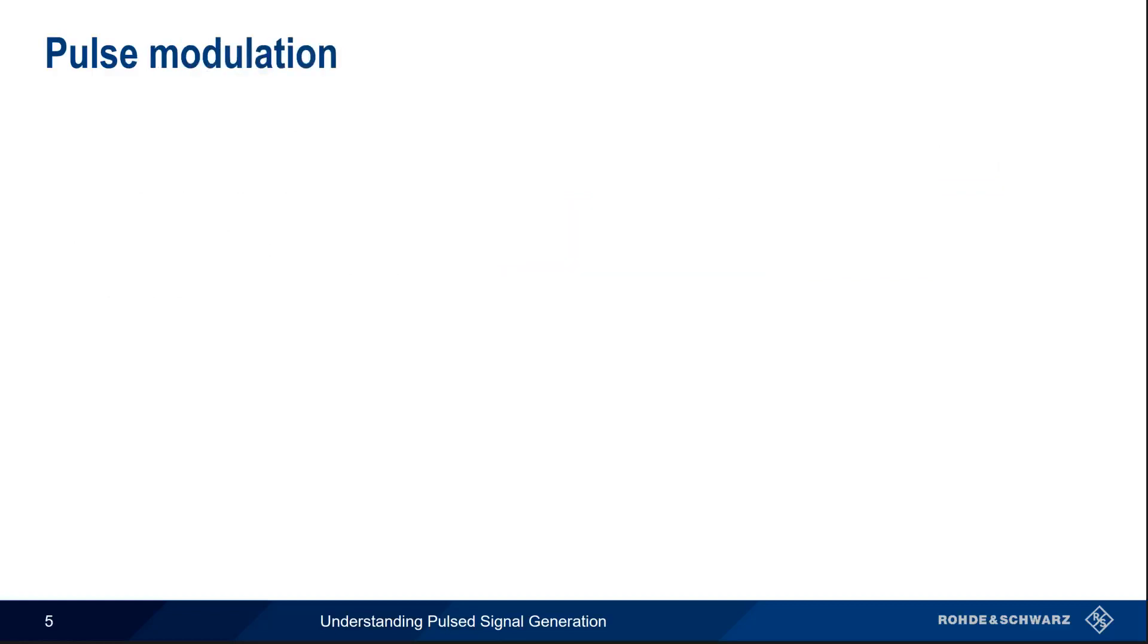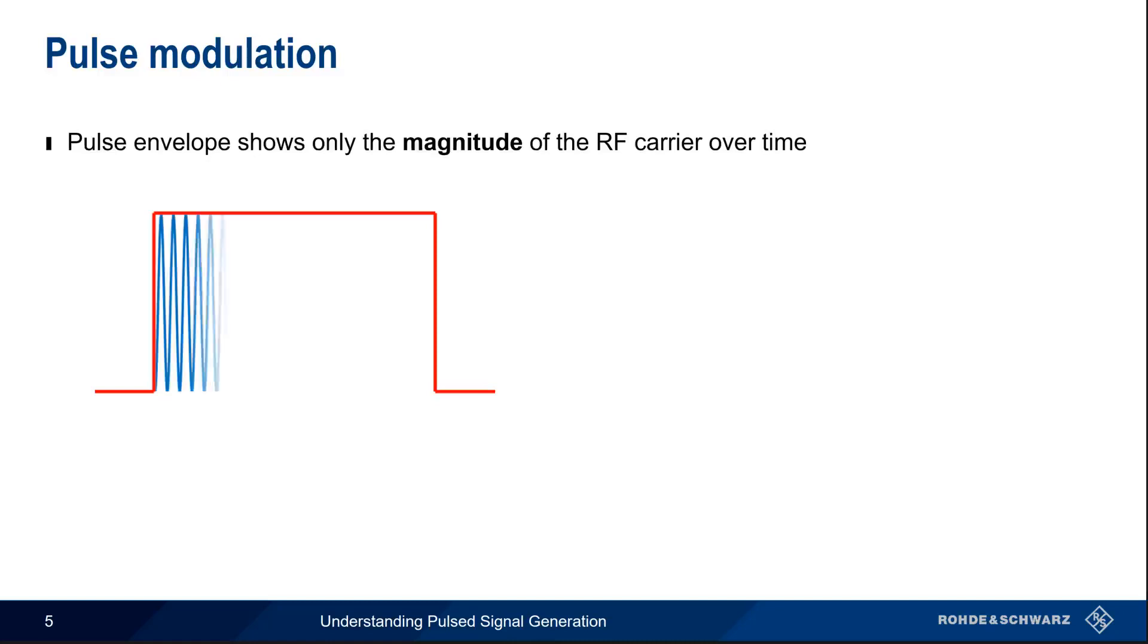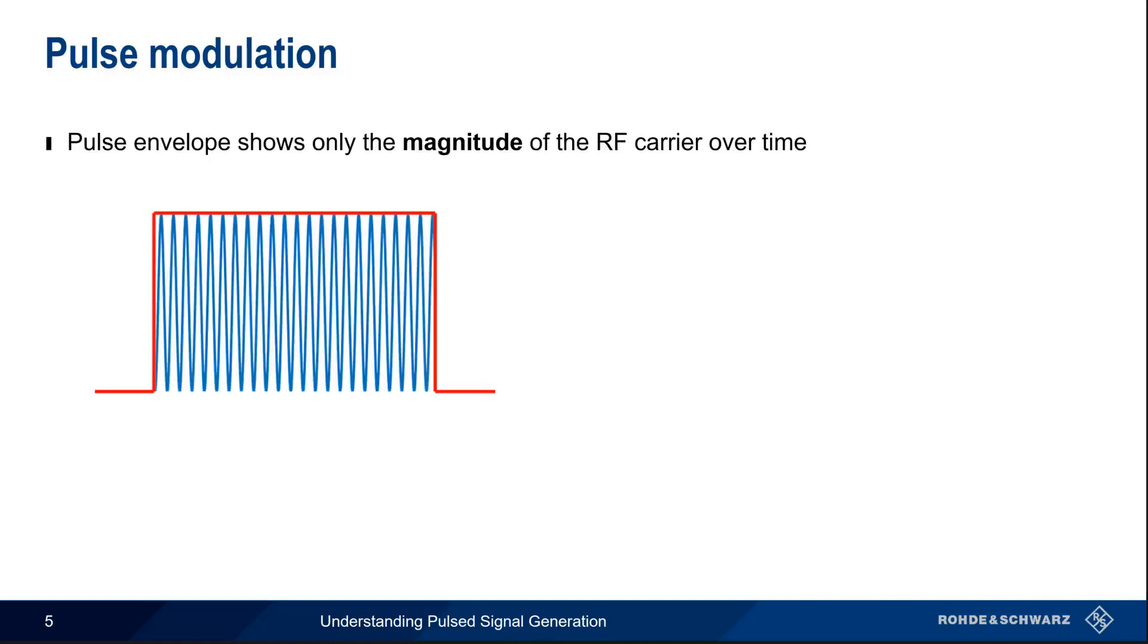We mentioned at the beginning of this presentation that we usually depict the envelope of a pulse, that is, the magnitude of the RF carrier over time. What the pulse envelope doesn't show is the frequency and phase of the carrier during the pulse. If the frequency and phase of the carrier are constant over the duration of the pulse, this is called an unmodulated pulse.